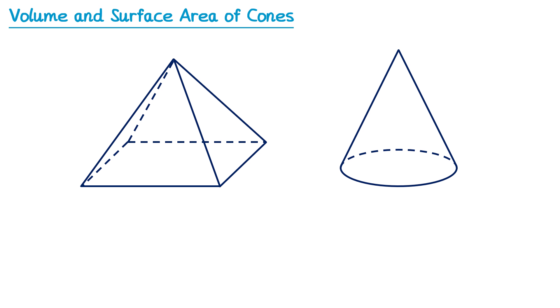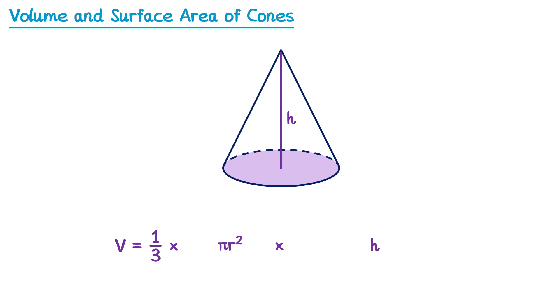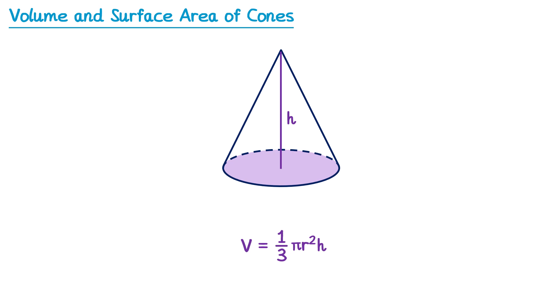A cone isn't technically a pyramid, but it's a bit like a pyramid where rather than having a square base we have a circular base. The volume of a pyramid was 1/3 multiplied by its base area multiplied by its perpendicular height, and this formula still holds for the volume of a cone. Since the base area is a circle, its area will be pi r squared, and for the perpendicular height — the height from the top of the cone vertically down to the base — we call it h. So we end up with the formula 1/3 pi r squared h.